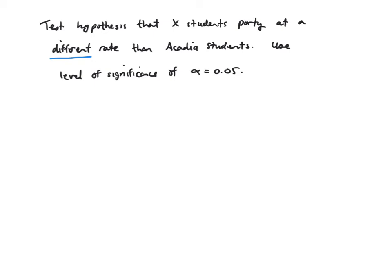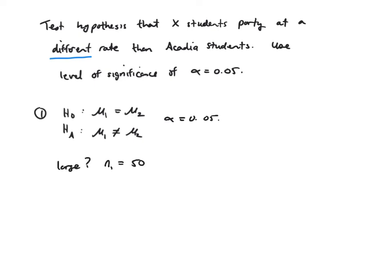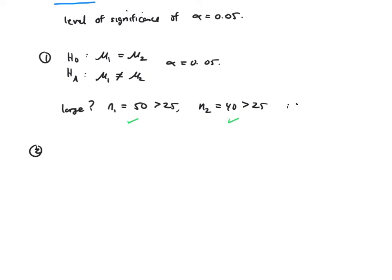Step 1: set up hypotheses. At H0, we assume the mean partying is the same at St. FX and Acadia. At HA, the mean hours spent partying per week are different: mu1 ≠ mu2. It doesn't matter if the difference is positive or negative — we're just testing for that difference. Alpha = 0.05. Checking sample size: N1 = 50 > 25 and N2 = 40 > 25, so both are large. We will continue.